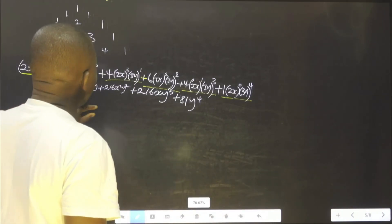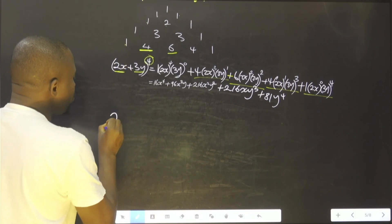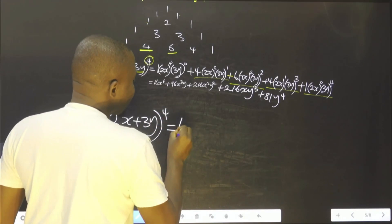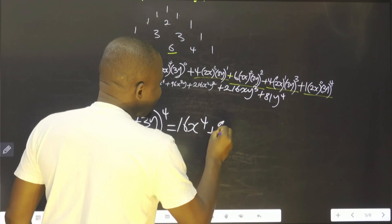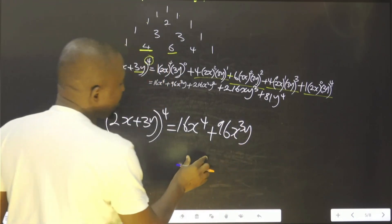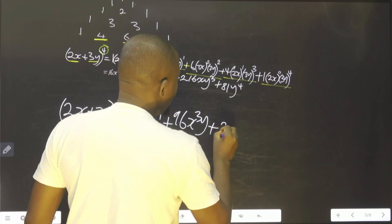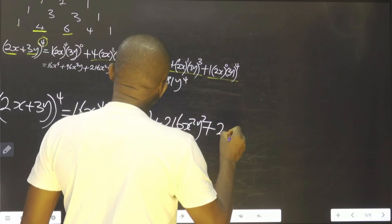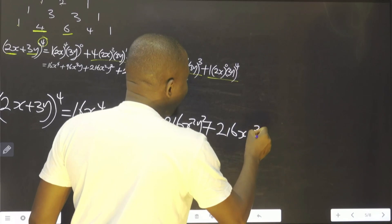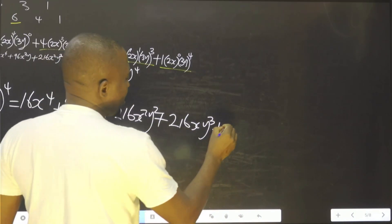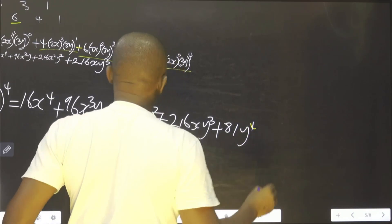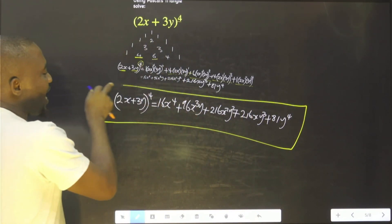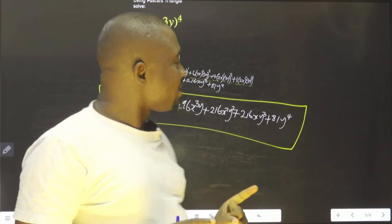So the final answer for (2x + 3y) raised to the power of 4 is equal to: 16x⁴ + 96x³y + 216x²y² + 216xy³ + 81y⁴. This is the final answer using Pascal's triangle.